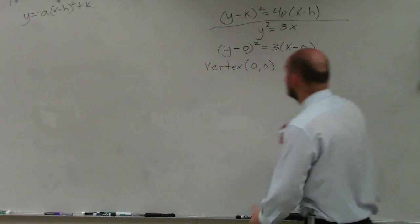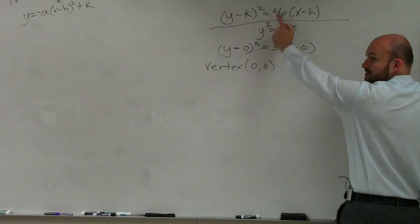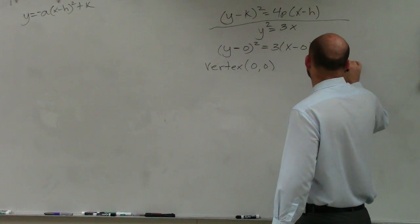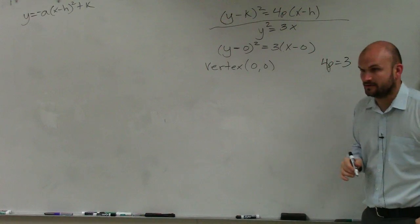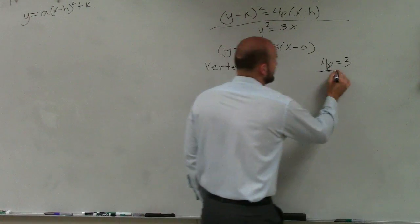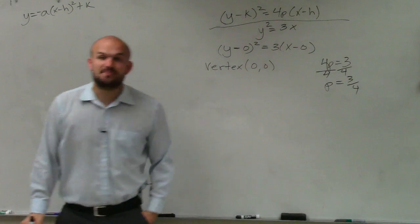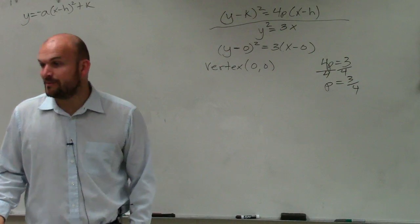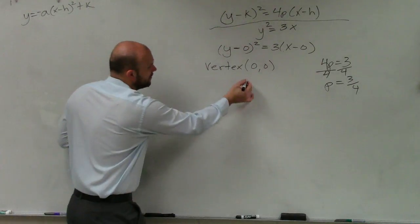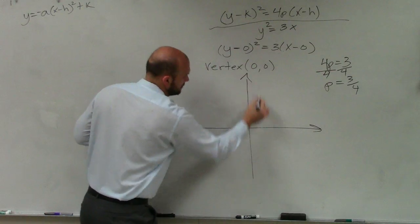So to find the p value, this is equal to 4p, right? Those are in the same positions, correct? So I say 4p equals 3. Now I need to find my value of p. So I divide by 4. p equals 3 fourths. Now, since my value of p is positive, I know my graph is going to open to the right. All right? So we just graph like this.